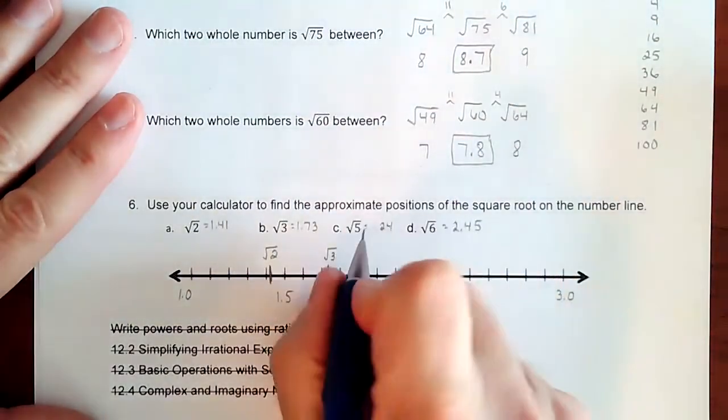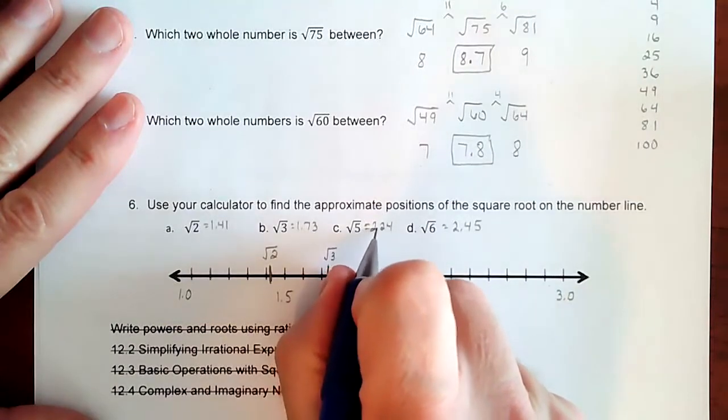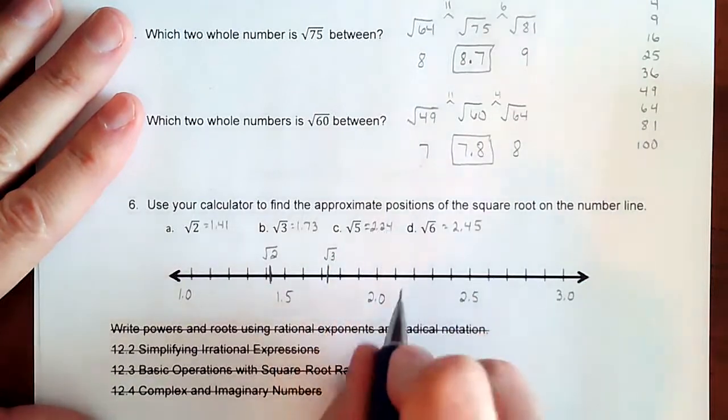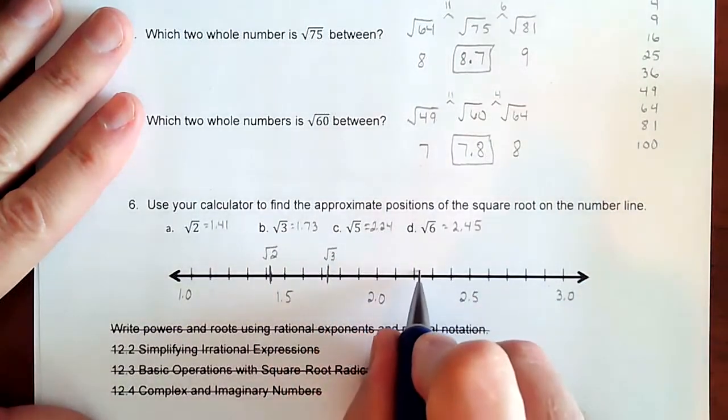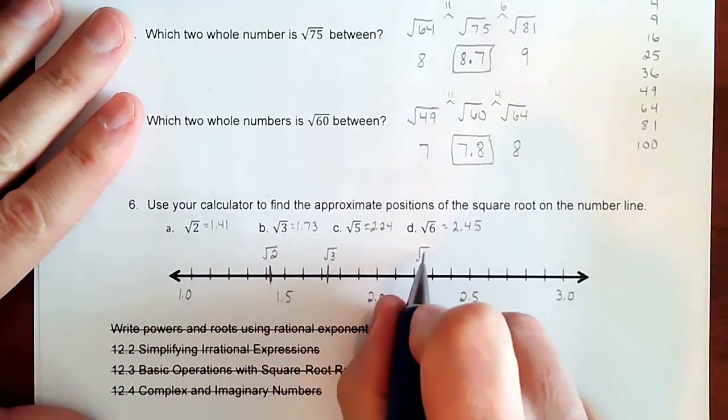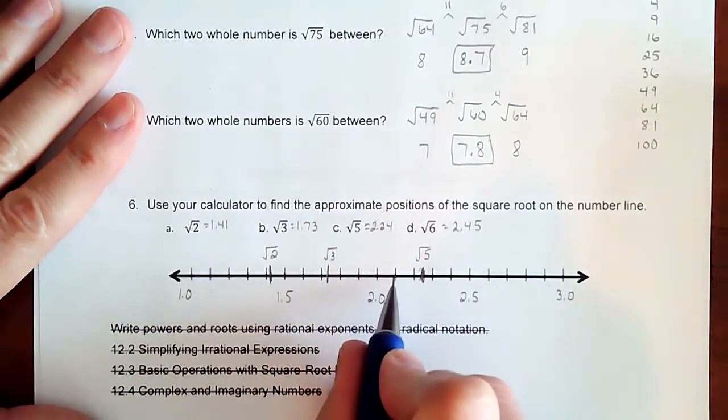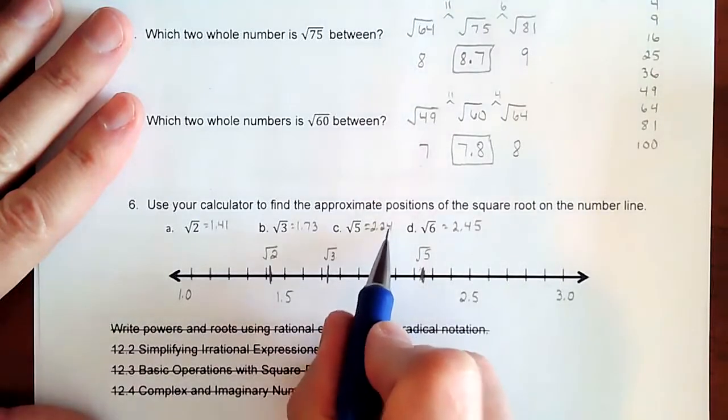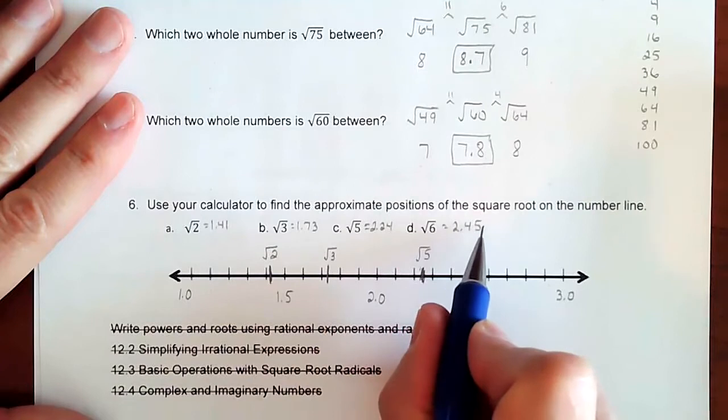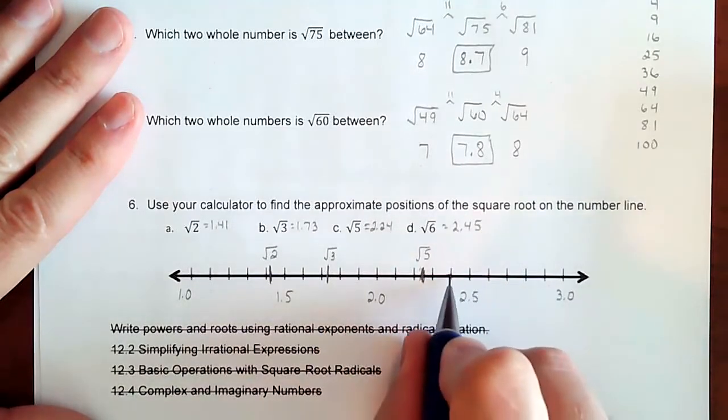And then square root of 5 was at 2.24. So 2.24 is 2.1, 2.2, and some change, but that change is almost halfway. That is the square root of 5. So 2.2 and almost halfway because of the 4. And then here, we're looking at it perfectly halfway. So 2.4 and then halfway. So 2.4 and then right in the middle.